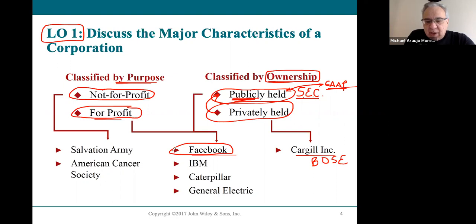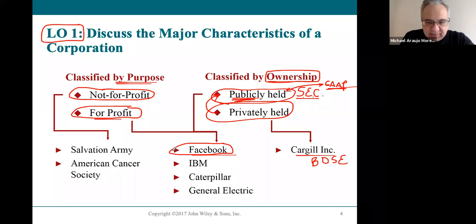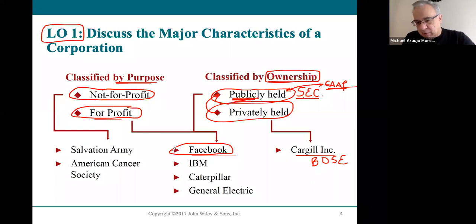Facebook was private, then it went public. When companies go public, that's when you hear about people like Zuckerberg, Bezos of Amazon, or Bill Gates of Microsoft becoming multi-billionaires — worth 120 billion, 50 billion. But how do we know that? Because if you're a publicly held company, all the information is public and has to be reported.